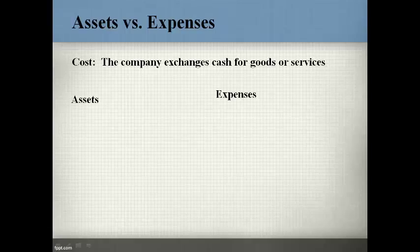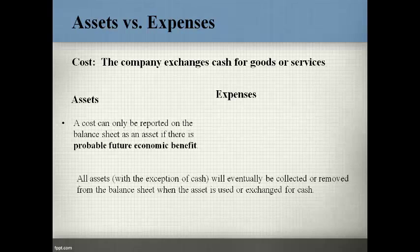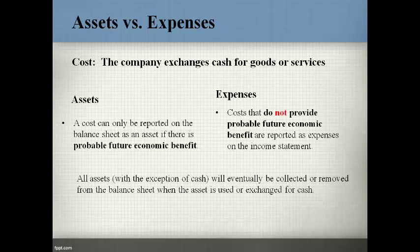A cost occurs anytime a company exchanges cash for goods or services. A cost is reported on the balance sheet as an asset or on the income statement as an expense. Accounting guidance and rules determine where the cost is reported. The cost is an asset when there is probable future economic benefit — meaning the asset will be exchanged for cash or used to generate revenues that bring cash in the future. Costs that do not provide probable future economic benefit are reported as expense. Expenses reduce profits. All assets, with the exception of cash, will eventually be collected or removed from the balance sheet when the asset is used or exchanged for cash.